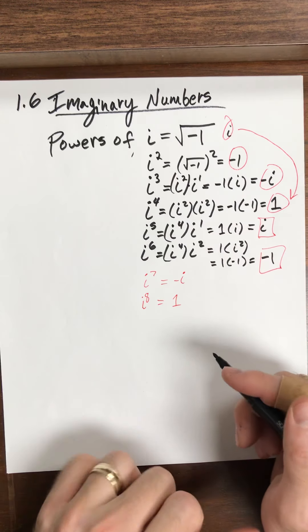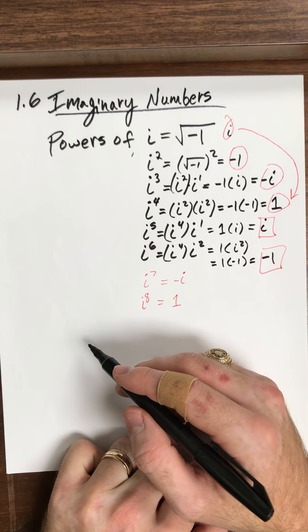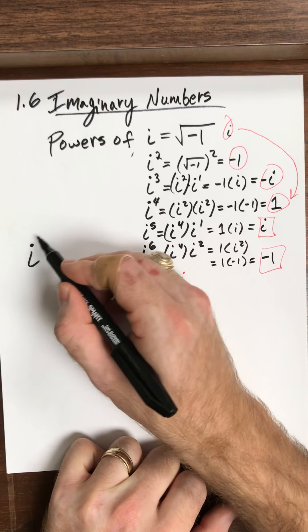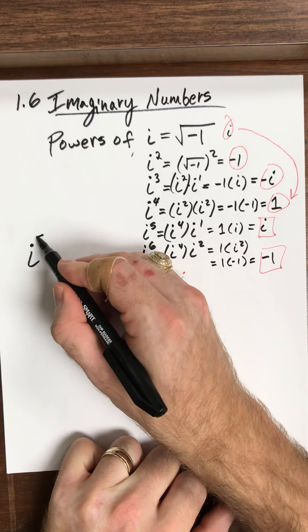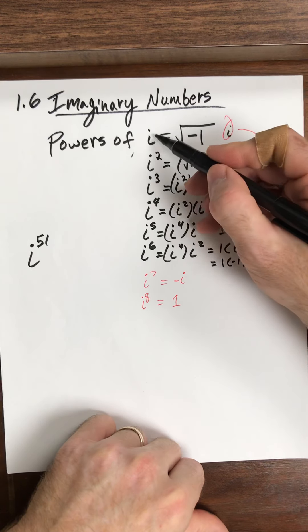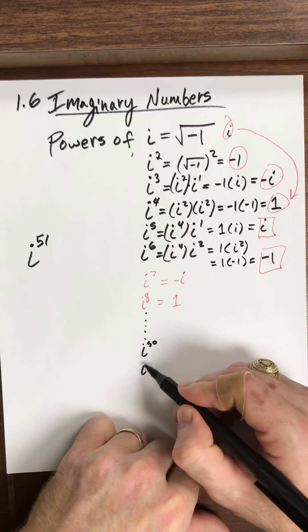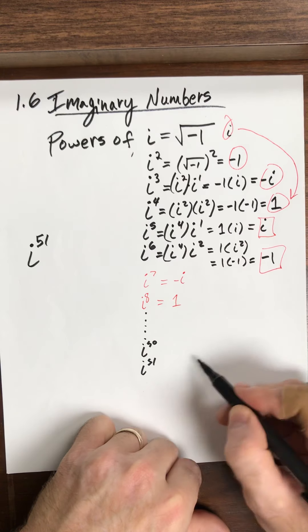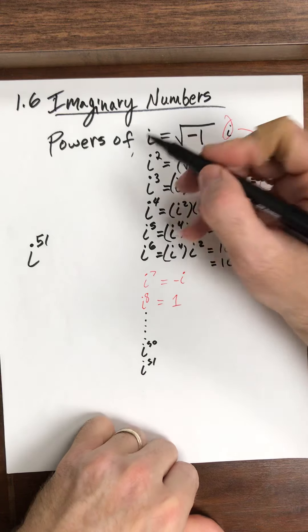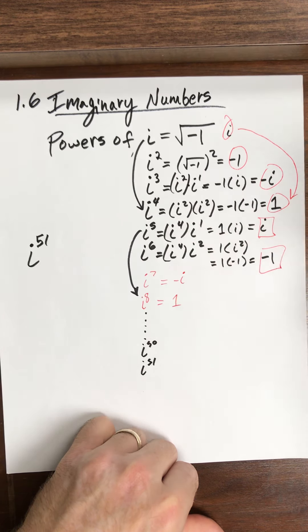So here's the idea here. So say, you know, I've got, man, let's just make up a number. So i to the 51. Now, you've got two options. Either you can go through this list and go all the way down, i to the 50, i to the 51, got it, right? So you can go through that cycle. Or you can notice that what happens, every fourth 1, it repeats, right?